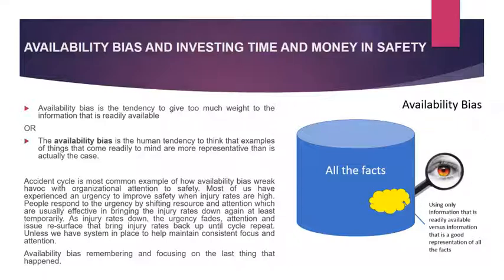Let's discuss the second type of bias: availability bias and investing time and money in safety. Availability bias is the tendency to give too much weight to information that is readily available. Most of us have experienced an urgency to improve when injury rates are high. People respond to that urgency by shifting resources and attention, which is usually effective in bringing the injury rate down, at least temporarily. As the injury rate goes down, urgency fades, and attention on the issue resurfaces, bringing injury rates back up — unless we have systems in place to help maintain consistent focus and attention. Availability bias focuses on the last thing that happened.